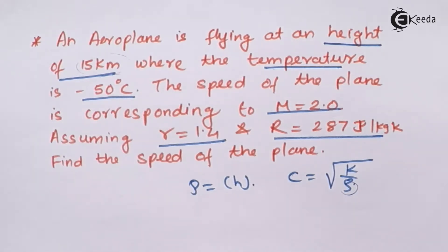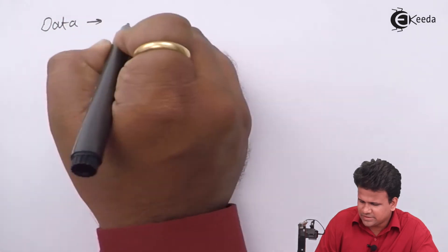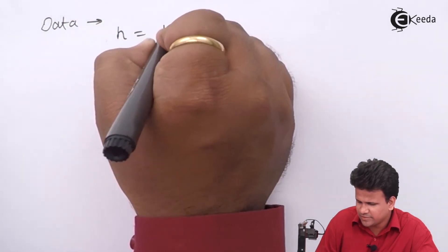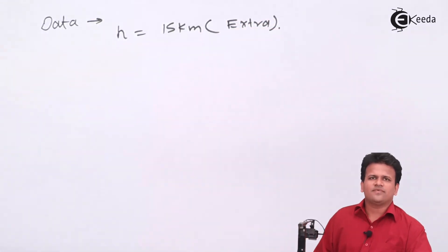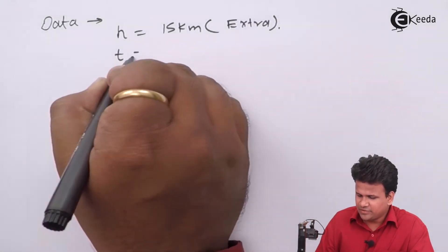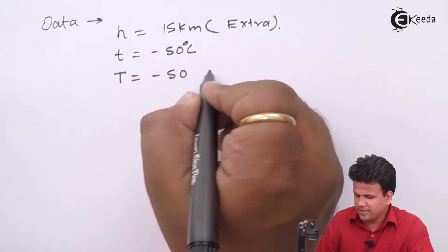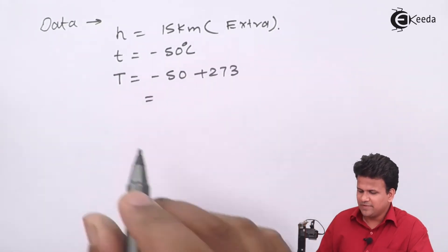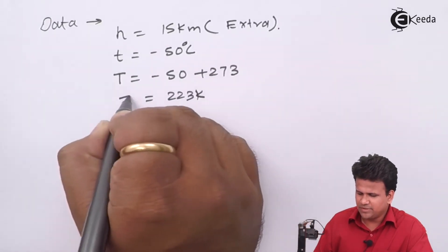Let us use the given data to calculate the velocity of the plane. The altitude h equals 15 kilometers, which is extra data of no use here. The temperature at this altitude is minus 50 degrees Celsius, so the temperature in Kelvin is minus 50 plus 273, which gives us 223 Kelvin.